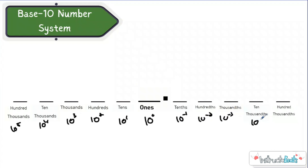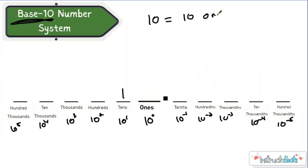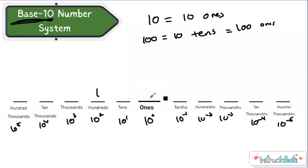It's important to remember that we are a base ten number system — that's really going to help you today — because we regroup after ten. If you have one ten, one ten is really equal to ten ones. If you have a one in the hundreds place, that would really be worth one hundred. One hundred is equal to ten tens. It's also equal to one hundred ones, because as we move place values we're getting bigger times ten. This is ten times ten because it's ten to the second power.